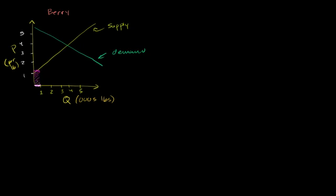So the opportunity cost for producing those 1,000 pounds would be right over there — on average for the first 1,000 pounds. You could also think that the very first pound's opportunity cost would be right over there, then the next pound, the 500th pound, the 1,000th pound. Now let's say we wanted them to produce another 1,000 pounds — so a total of 2,000 pounds. What would we have to do?